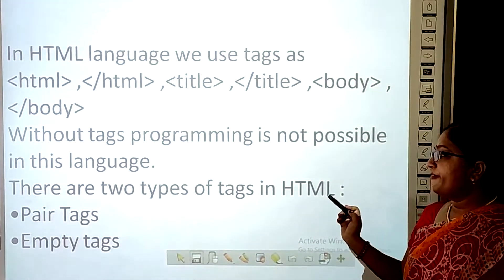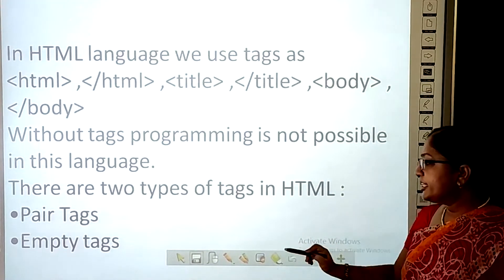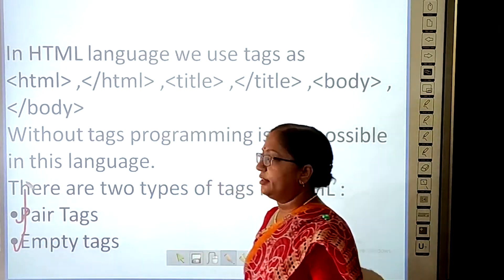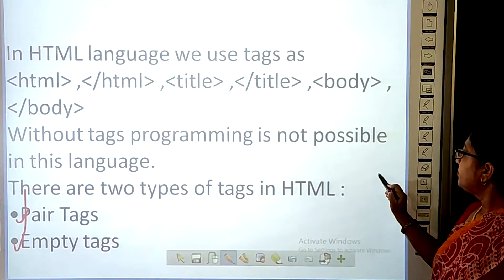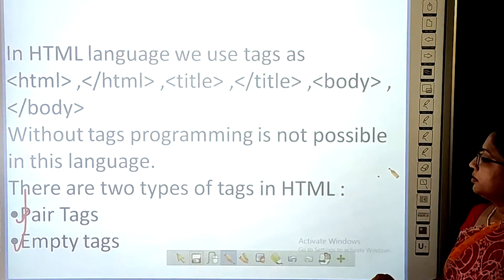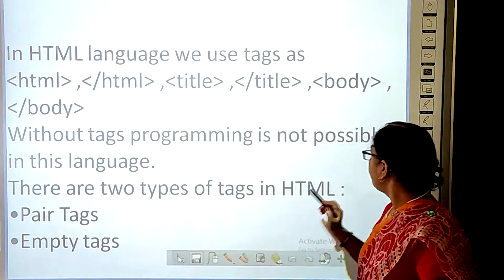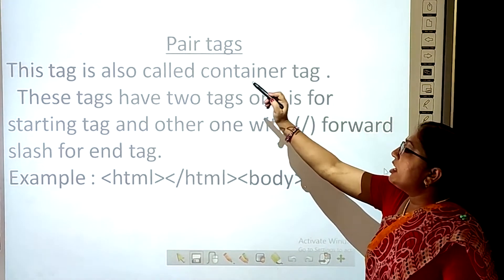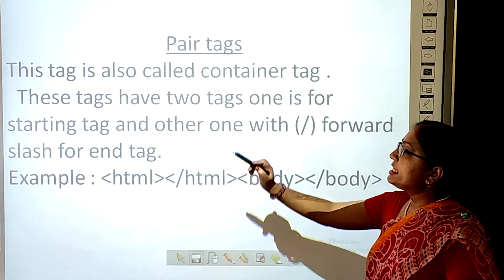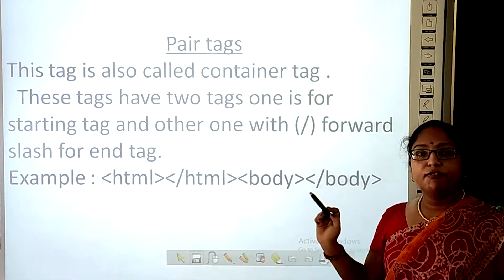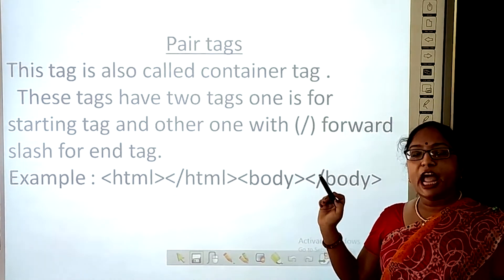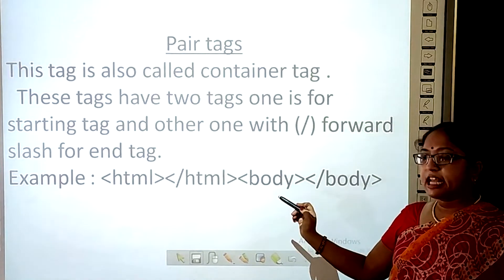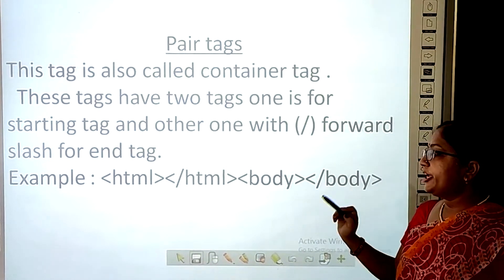There are two types of tags in HTML. First is the pair tag, and the second one is the empty tag. Pair tags are also called container tags because they have an opening tag and a closing tag. Examples of pair tags include HTML, closing HTML, body, and closing body.